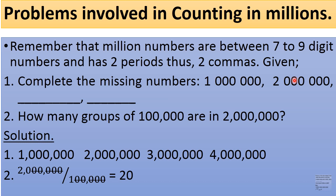Complete the missing numbers: 1 million, 2 million, blank, 3 million, blank, 4 million. Now, how many groups of 100,000 are in 2 million? To solve this, divide: cancel three zeros from 2,000,000 and three zeros from 100,000, then cancel two more zeros from each side. We are left with 2 divided by 1, which equals 20. So there are 20 groups of 100,000 in 2 million.